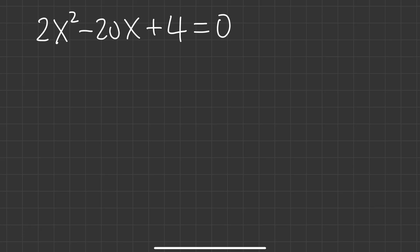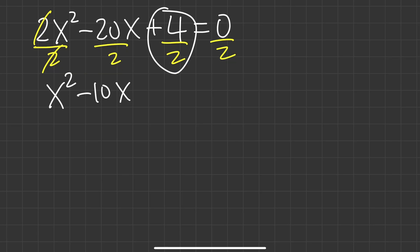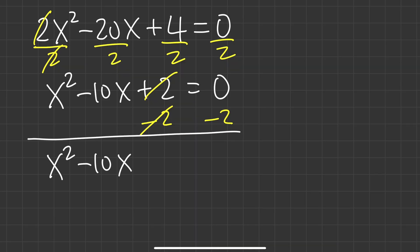One more example without pictures: 2x squared minus 20x plus 4 equals 0. We don't want the 2 in front of x squared, so divide everyone by 2. We get x squared minus 10x plus 2 equals 0. Subtract 2 from both sides: x squared minus 10x equals negative 2, leaving a space for the magic number.